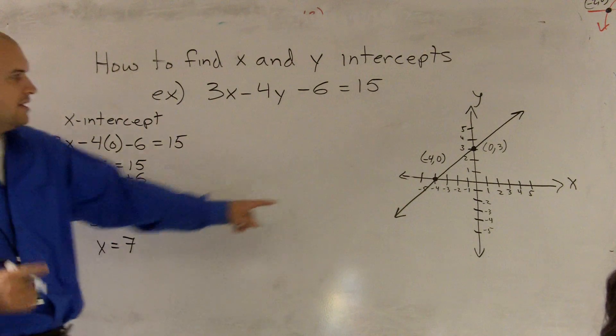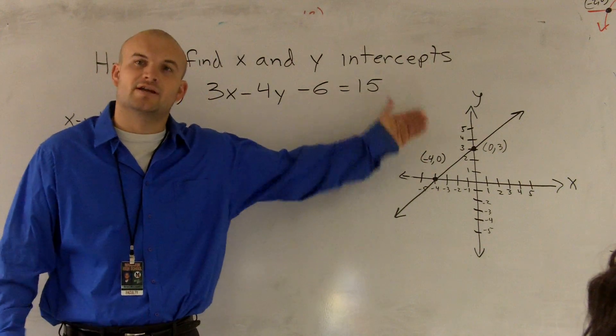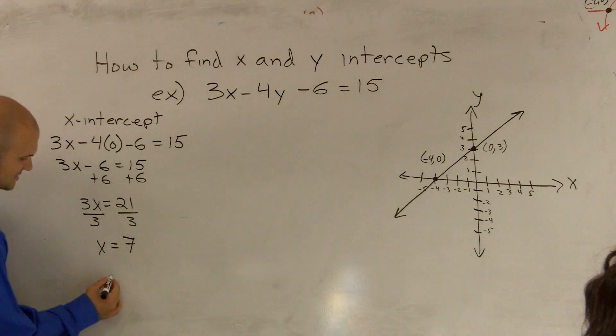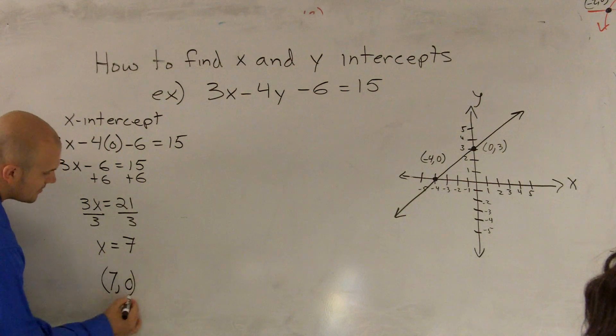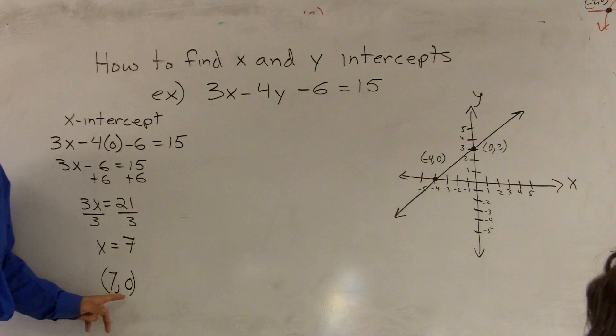However, as you notice, the x-intercept is actually a point. It has an x-value and a y-value, so I write this as 7 comma 0. That would be my x-intercept.